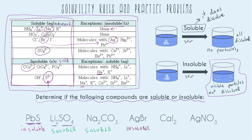Next I have calcium iodide. Looking in the grid, I don't see calcium on the left-hand side, but I do see iodide, and it looks like it's going to be soluble. Checking the exceptions — that's silver, mercury, and lead. None of those apply to calcium, so calcium iodide is soluble.